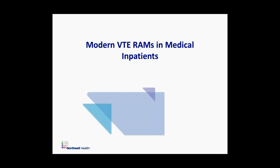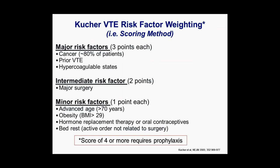The modern era of VTE risk assessment probably started with the Kutcher VTE risk model, published as part of an EHR strategy using electronic alerts to ensure appropriate prophylaxis. The Kutcher model was one of the first truly scored models: major risk factors such as cancer, prior VTE, and hypercoagulability gave three points; major surgery gave two points; and minor risk factors including advanced age, obesity, hormone replacement therapy, or immobility gave one point. Once a score of four was reached, the patient required thromboprophylaxis. This model heralded the era of individualized, scored, and weighted risk assessment.